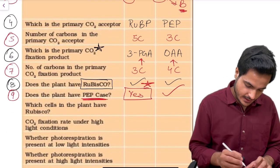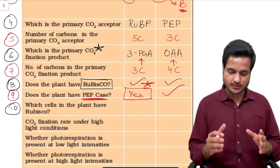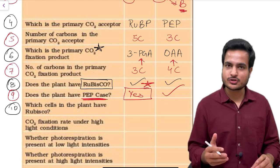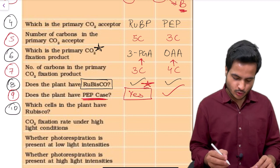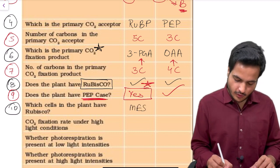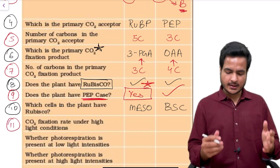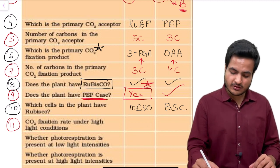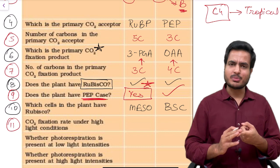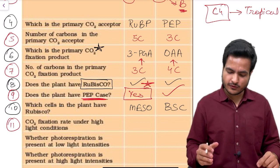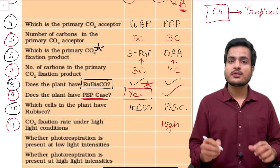The tenth question asks which cell in the plant has Rubisco. This is similar to the first question about where Calvin cycle occurs — Calvin cycle occurs wherever Rubisco is present. So the answer is mesophyll cells for C3 plants and bundle sheath cells for C4 plants. The eleventh question asks about the carbon dioxide fixation rate under high light conditions.